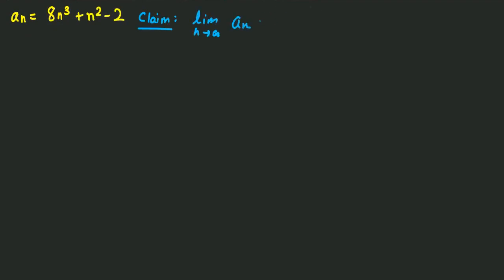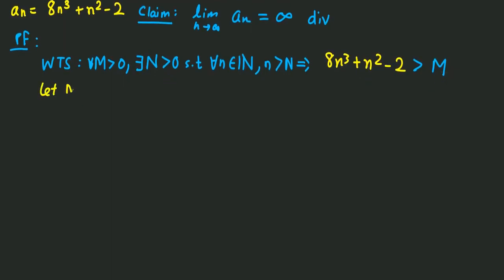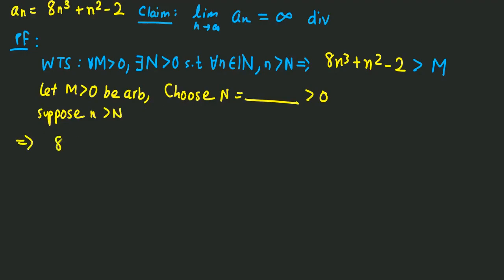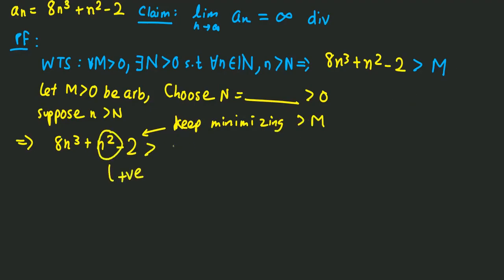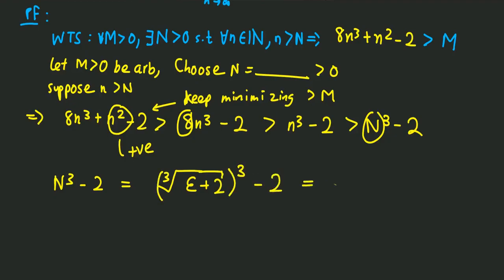This is an example where the sequence diverges. The most dominant term is the cubic term, so it clearly goes to infinity. We modify the definition: we add M to it, remove the absolute values, and make the sequence greater than M — no limit, just the sequence is greater than M. We let M be arbitrary, choose N, suppose the antecedent, and keep minimizing algebraically. With n^3 - 2 remaining, we let N = (M + 2)^(1/3) and expanding that out gives us epsilon.